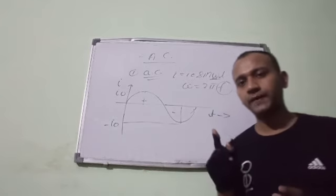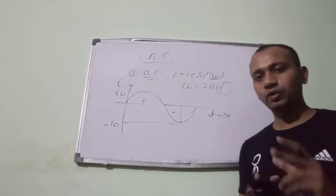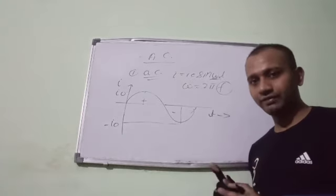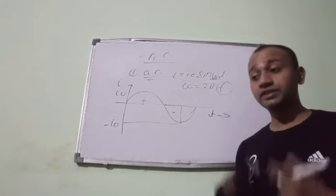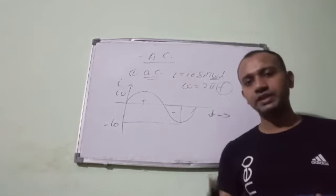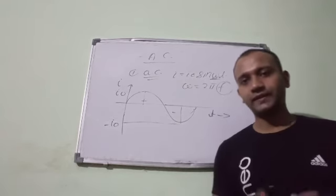Representation is I naught sine omega t, where I naught is the peak current, and omega which is equal to 2 pi f. Where f is the frequency which signifies how many times the current will change direction in one second.